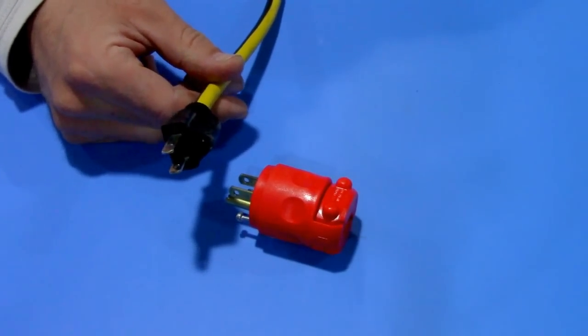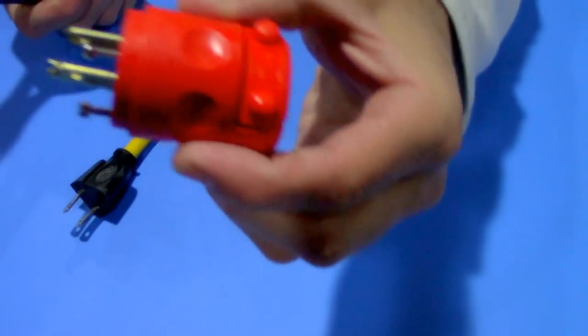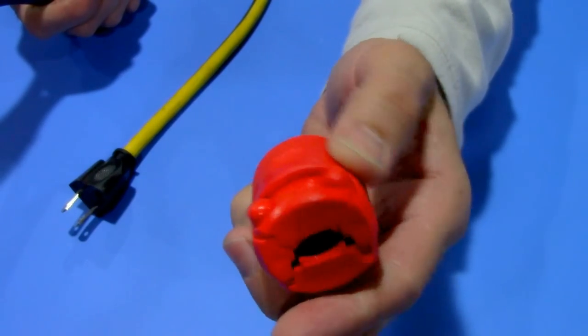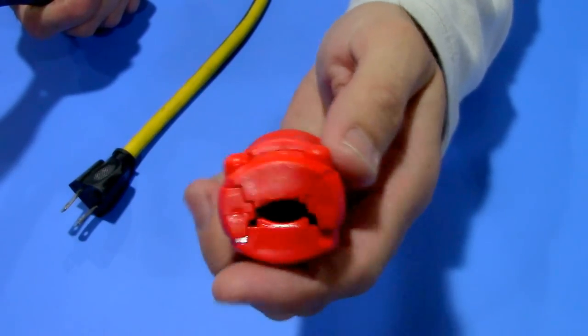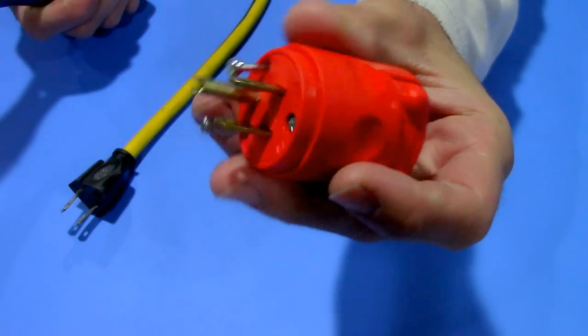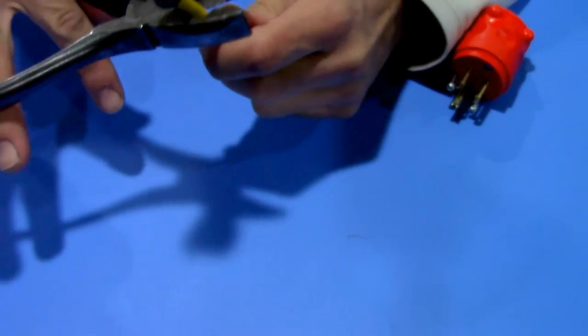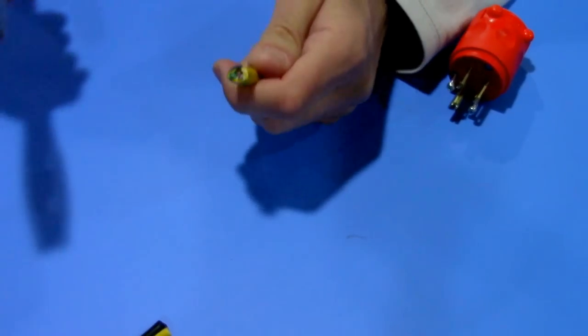You can get a new end, male or female, and they have a lot of different varieties. This one's from Home Depot, just under three bucks. Okay, first thing you're gonna do is clip off the end.